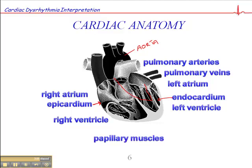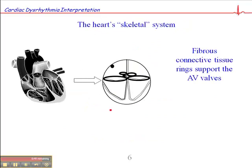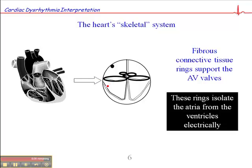I want to mention the papillary muscles — these string-like muscles that hold on to the atrioventricular valves and keep them from everting, maintaining a seal so blood doesn't back up into the atria. When we look at the myocardium from an ECG perspective, the atrioventricular valves are separated by fibrous connective tissue rings, which effectively support the AV valves but also isolate the atria from the ventricles electrically.